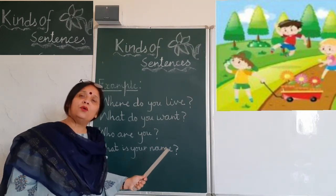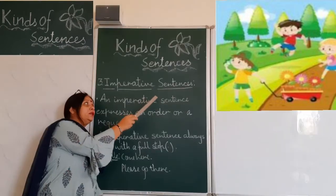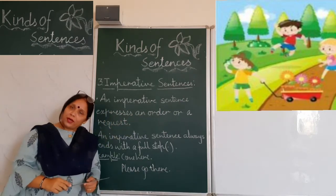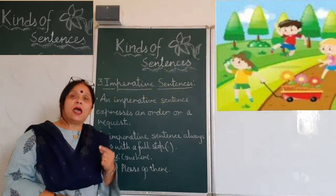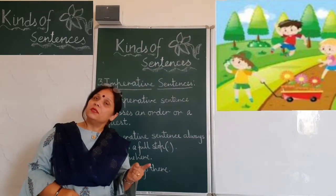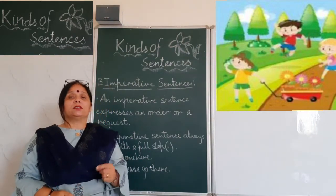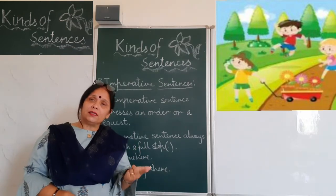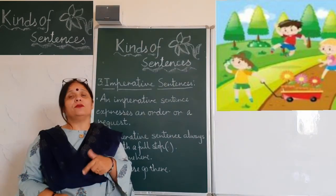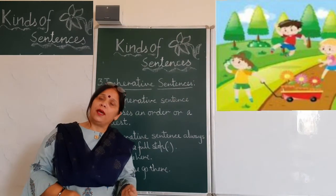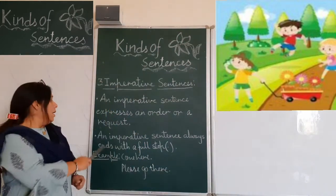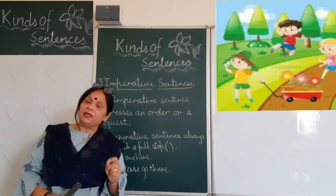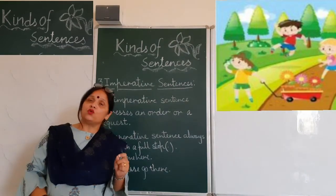Now it's the turn to know about the imperative sentences. An imperative sentence expresses an order or a request. The sentence which expresses an order or a request is called an imperative sentence — we are either ordering someone or requesting someone to do something. An imperative sentence always ends with a full stop.